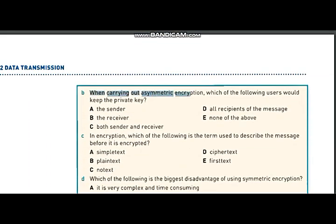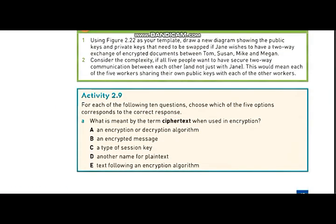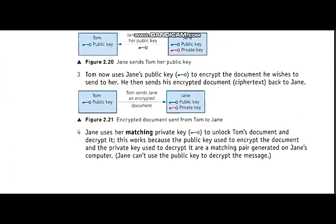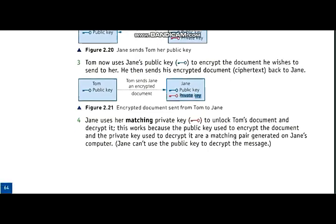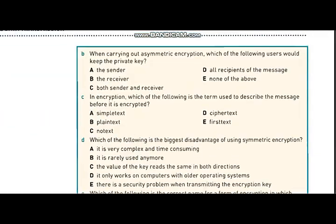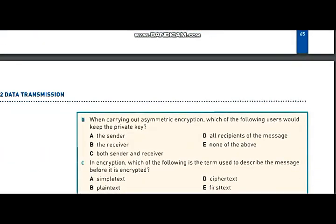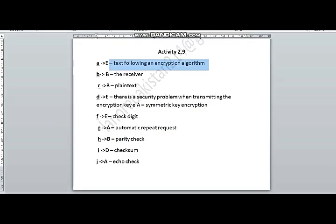The next question, part B: when carrying out asymmetric encryption, which of the following users would keep the private key? As you can see from the text, the private key is only with the receiver of the message. You can see from this arrow that Jane is receiving the message, so the private key is only with the receiver. Therefore, option B is the correct answer for part B.